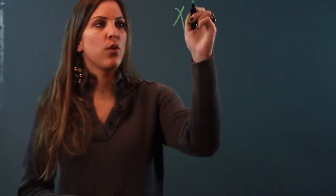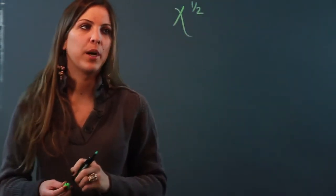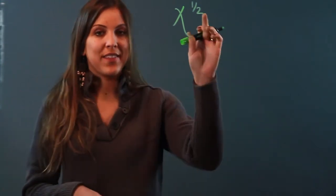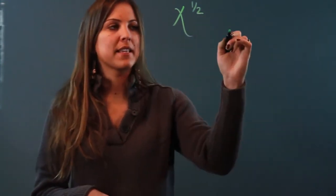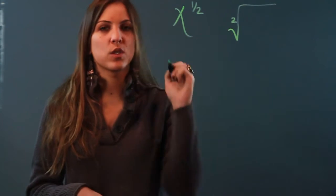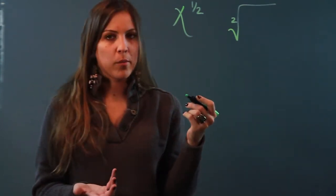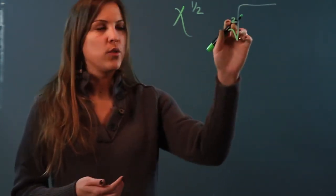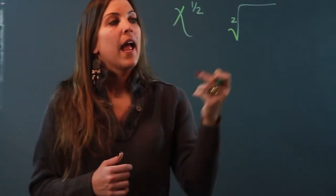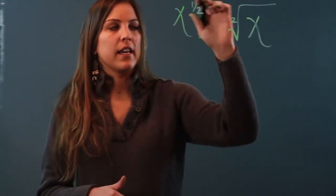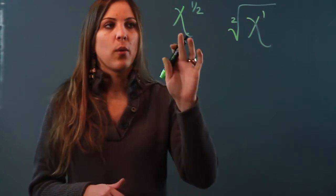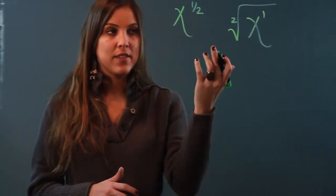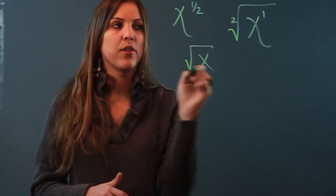So if you have x to the one-half power, what you're going to do is take the denominator of your power and that's going to become the root, so that means I'm doing the square root. Now generally when we're doing square roots we don't write the two there, but I'll do it for clarity. And then inside of my radical I'm going to write x to the first. So x to the one-half power is the same thing as the square root of x.